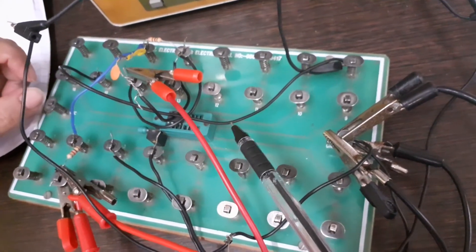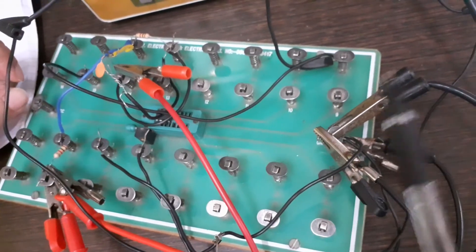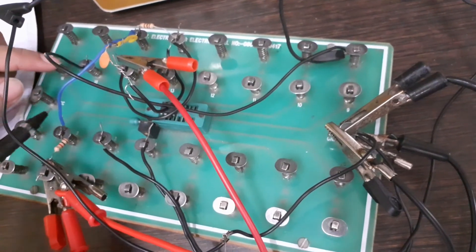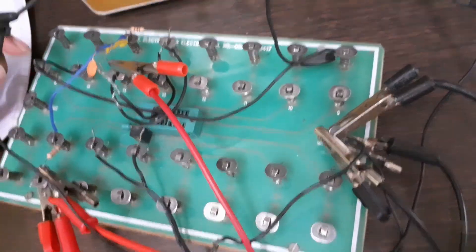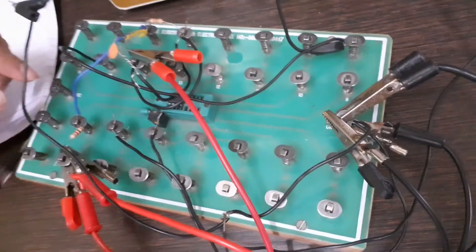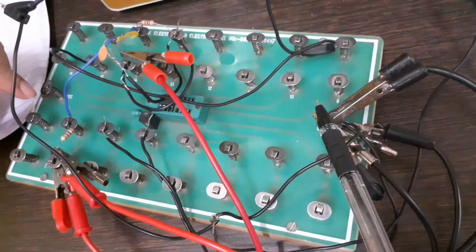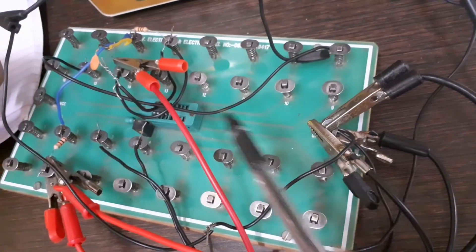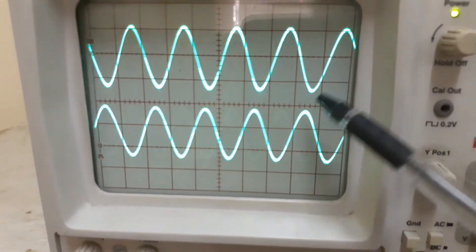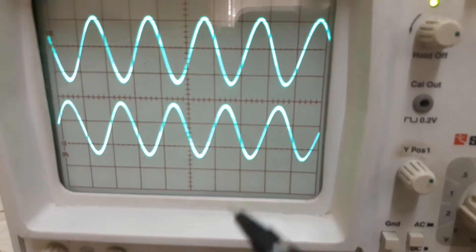After this we will see the output voltage. We will check it with pin number 2 and we will see the output voltage at pin number 6. So you can see the waveform we are getting like this. This is the input waveform and this is the output waveform.